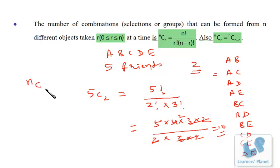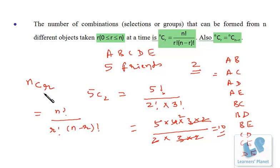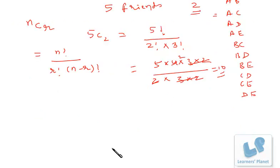So if we have n objects and we have to select r objects out of them, the formula will be nCr. The number of combinations will be nCr, and the expansion of nCr is n factorial over r factorial into (n minus r) factorial. I won't give the derivation here because it would be really time-consuming — just memorize this formula: nCr equals n factorial by r factorial into (n minus r) factorial. This is what selection only means.